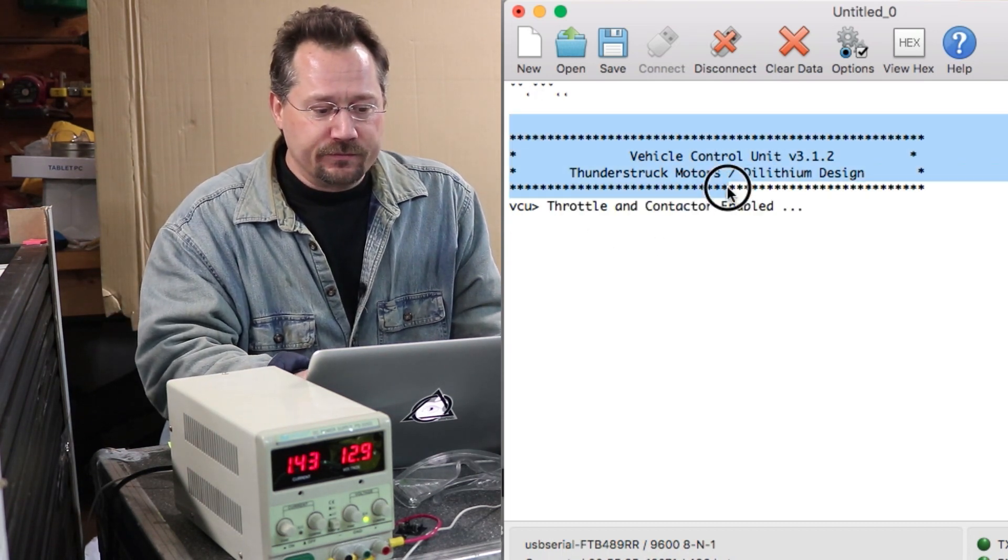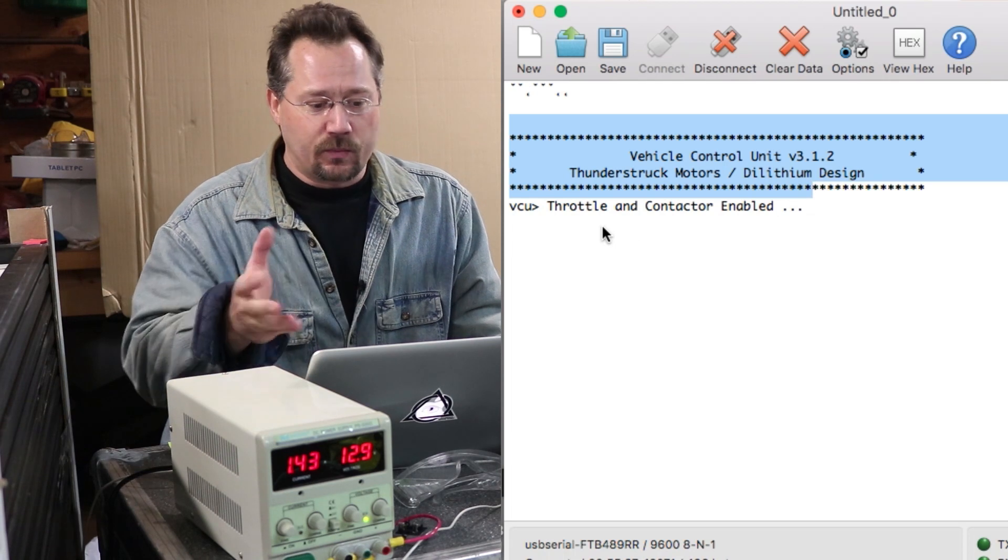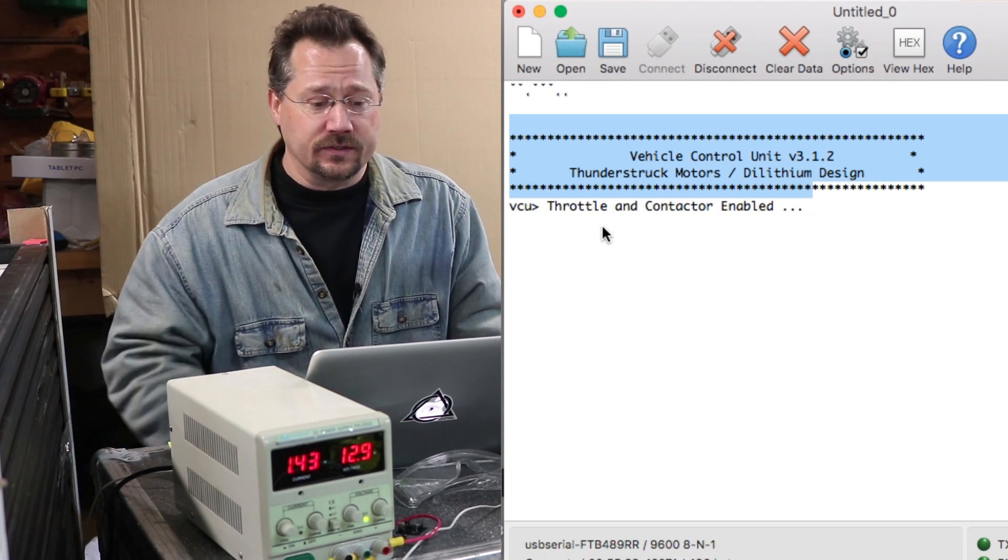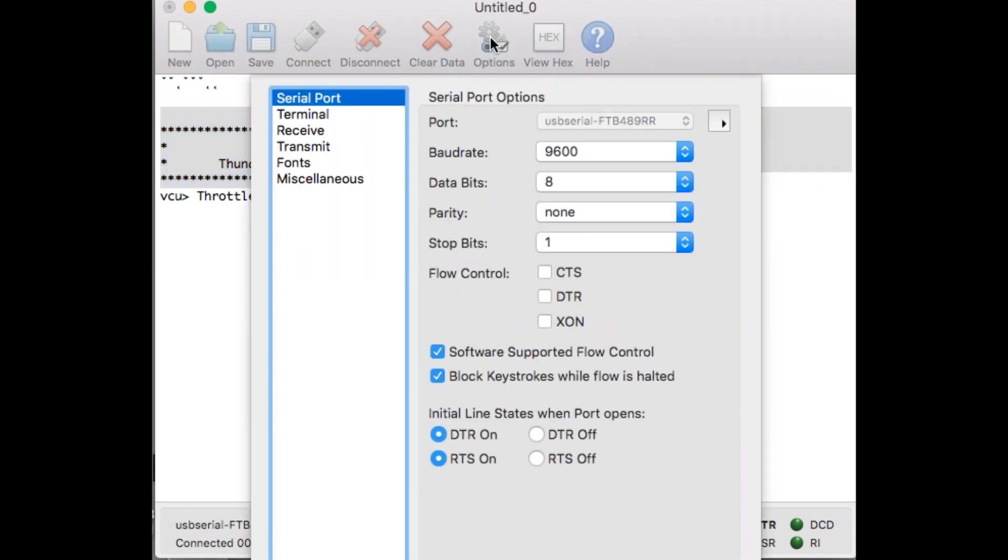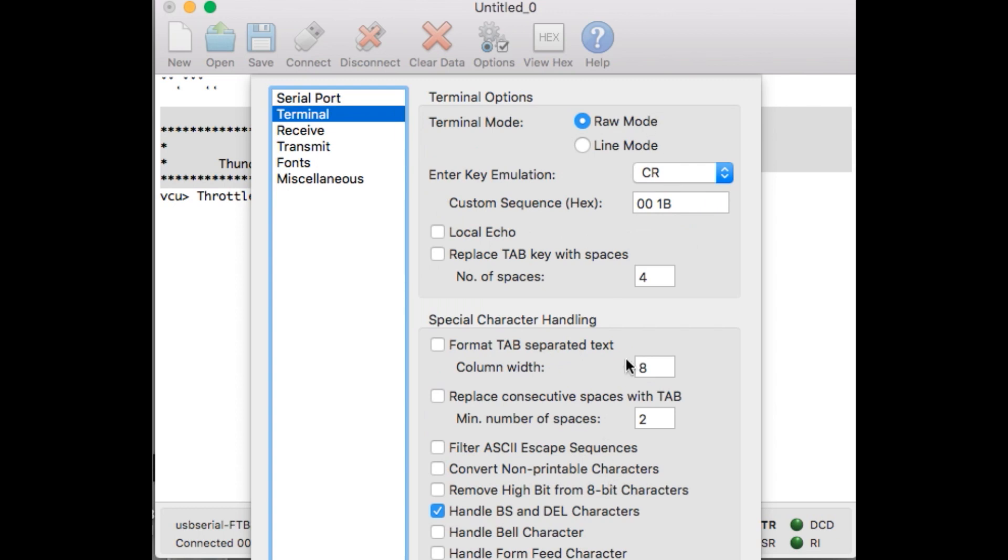I'm going to turn the VCU on and right away on the software we get some information popping up, it tells us the throttle and contactor are enabled. Now the first time you do this you have to go in, you have to check a few settings to make sure you properly connect. In this case we're using that USB serial, baud rate has to be correct and there's a couple of settings right through here that you want to check as well.